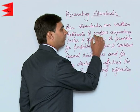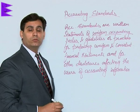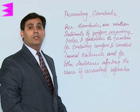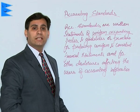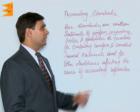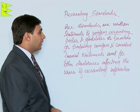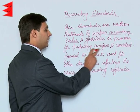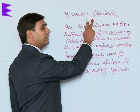They are written statements of uniform accounting rules. Uniform accounting rules means they are statements which try to lend qualitative edge to the data. The quality of the data depends on uniformity and its usability, and through accounting standards this uniformity is ensured.